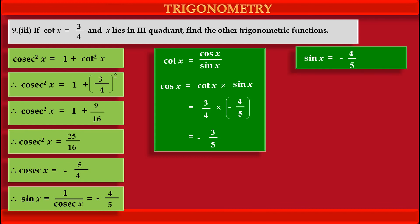We got the value of sin x as −4/5. This is our first trigonometric function. We got the value of cos x as −3/5.